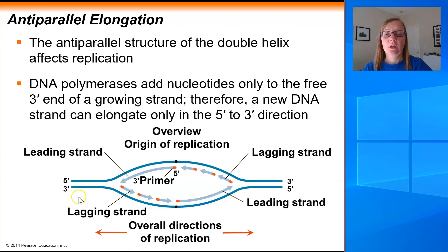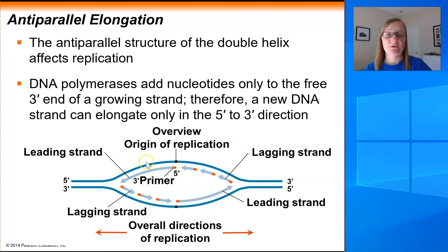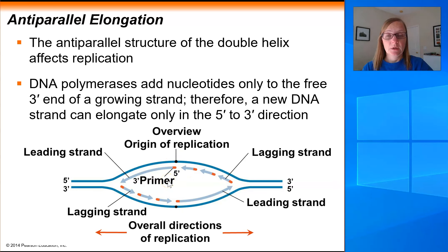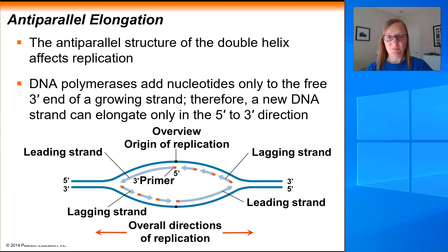On this slide we've got a very simplified example of a double-stranded piece of DNA with an origin of replication in the middle and a DNA replication bubble that has opened up there. Remember that DNA replication starts at the origin and it moves in both directions away from the origin. So we're going to look at just one strand at a time to see how this process takes place.